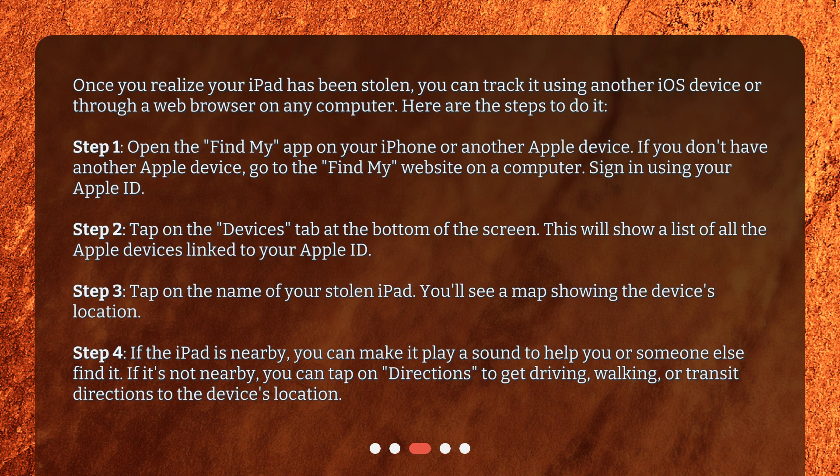Step 3: Tap on the name of your stolen iPad. You'll see a map showing the device's location. Step 4: If the iPad is nearby, you can make it play a sound to help you or someone else find it. If it's not nearby, you can tap on Directions to get driving, walking, or transit directions to the device's location.